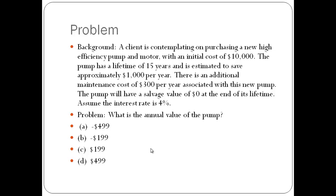Is it A, negative $499, B, negative $199, C, $199, or D, $499?